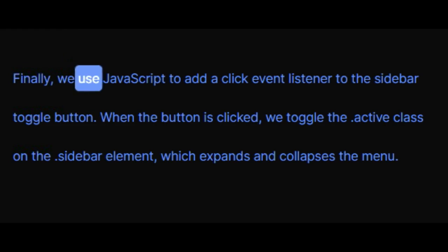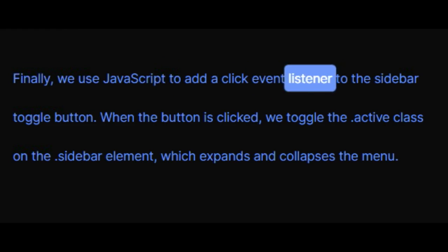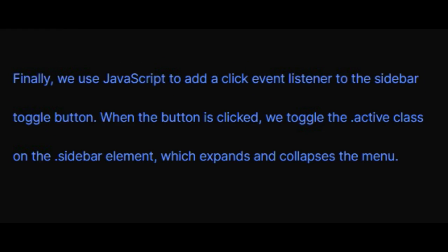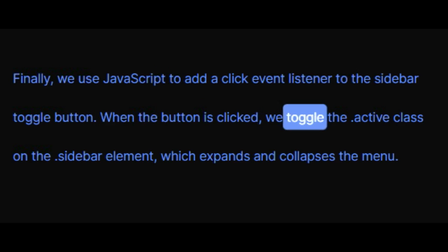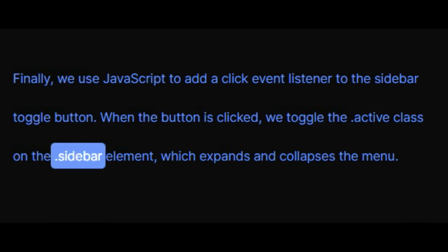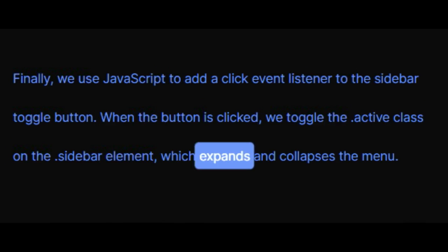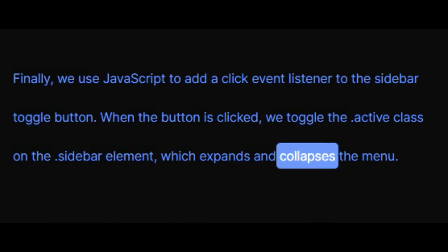Finally, we use JavaScript to add a click event listener to the sidebar toggle button. When the button is clicked, we toggle the active class on the sidebar element, which expands and collapses the menu.